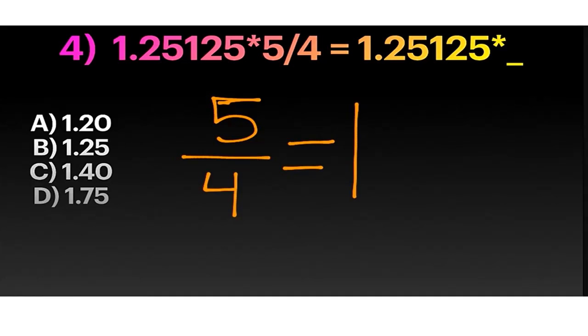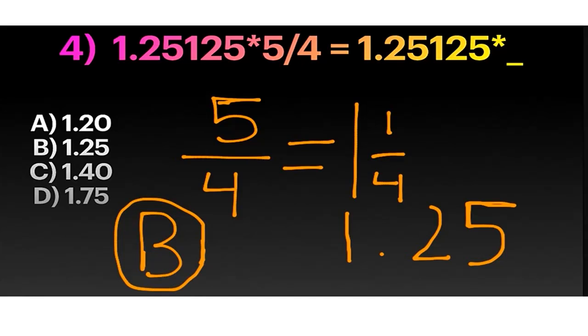We can change it into 1 and 1 fourth. If we wanted to write it in a decimal, it would be 1 point, and then 1 fourth would be 0.25. So our answer would be B, 1.25.